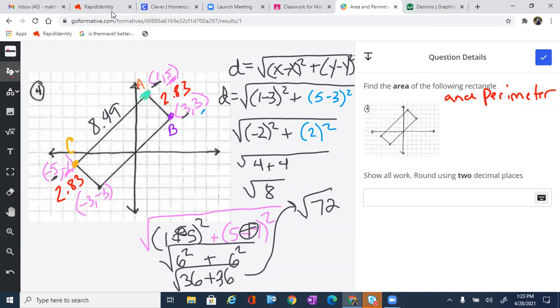We have to remember, since it is a rectangle, opposite sides are congruent to each other. Now, when we want to find the area, remember that the area is base times height. We said this was a rectangle. So that tells us that these are 90 degrees. So all we really need to do in this case is say, what is 2.83 times 8.49? That will give us the area.